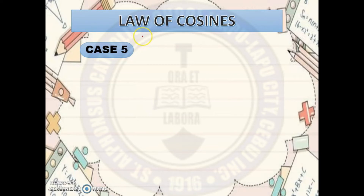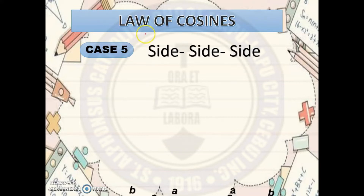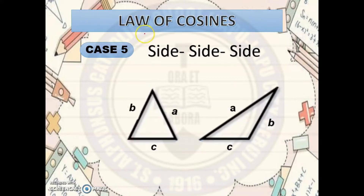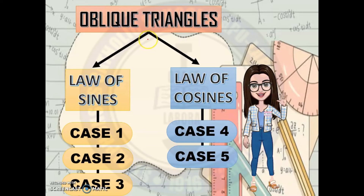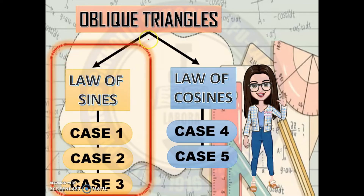For Case 5, the last but not the least — this is very easy: side-side-side, meaning the given in the problem are the three sides of the triangle. If this is the given, then it is classified as Case 5 and you will use the Law of Cosines. For today's lesson, we're going to focus on the Law of Sines — the problems classified as Cases 1, 2, and 3.